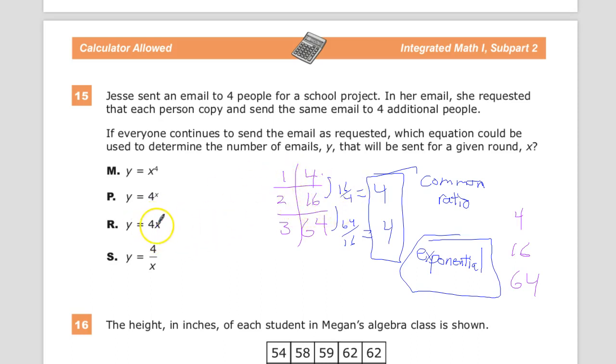So four times one is four. So that's looking good in the first term. Four times two is not 16, so that's out. Four divided by one is four, so that works. Four divided by two is not 16, so that's out.